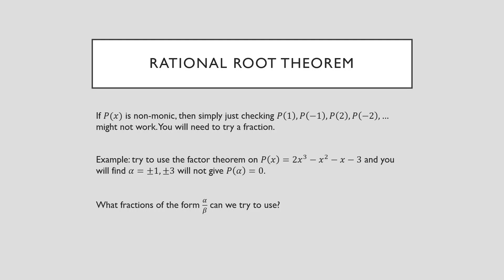In the last video, we said if you've got a monic polynomial, then you don't need to worry about using the remainder theorem with multiple values of beta. We said that beta is allowed to equal one, and you only have to test different values for alpha. For example, with p(x) = 2x³ - x² - x - 3, you could test p(1), p(-1), p(3), and p(-3), and you'll notice that none of these give you an answer of zero, meaning there are no factors of that form.